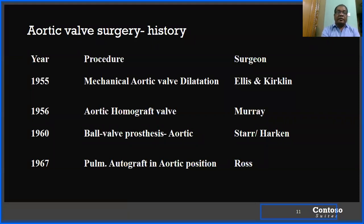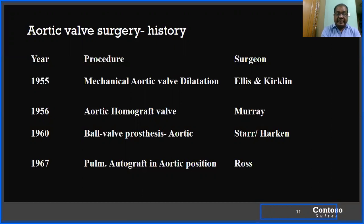The history of aortic valve surgery is long. In 1955, mechanical aortic valve dilation was performed by Ellis and Harken. In 1956, aortic homograft valve replacement was done by Murray. In 1960, a ball-and-cage prosthetic aortic valve was placed by Starr and Harken. In 1967, the pulmonary autograft in aortic position — the Ross procedure — was performed.